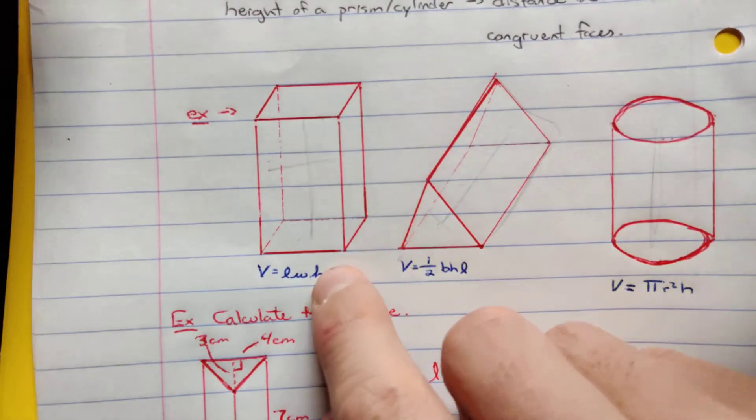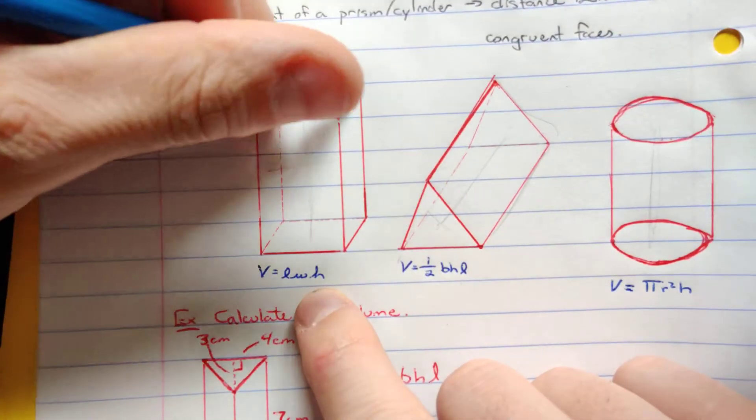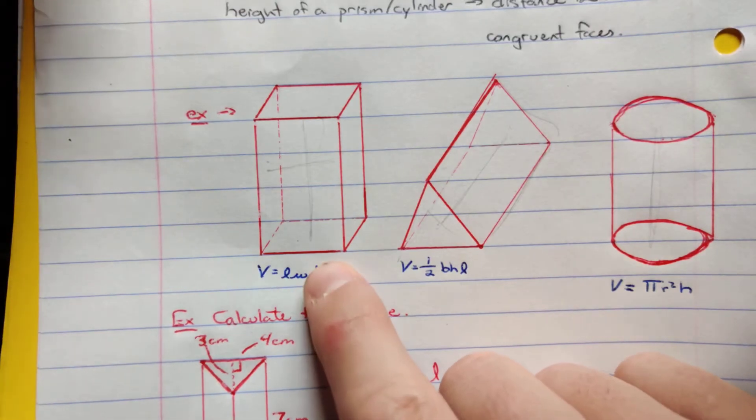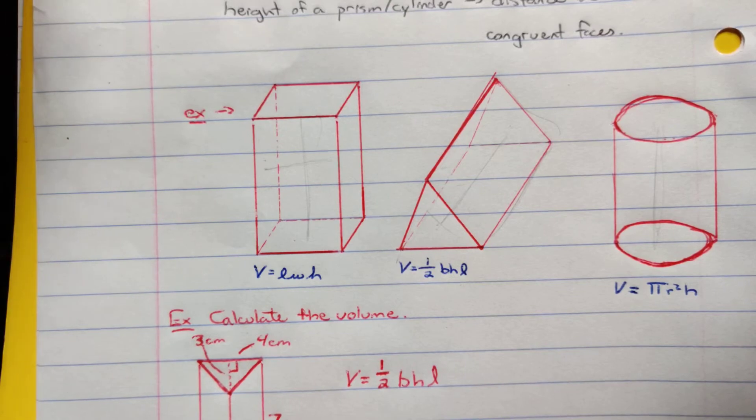And then our formulas. If you notice, volume equals length times width times height. What's the area of a square or rectangle? Length times width. And then we're just multiplying it by the height. Essentially, what we're doing here is we're just stacking a whole bunch of these shapes on top of each other.